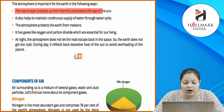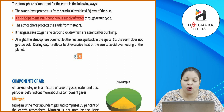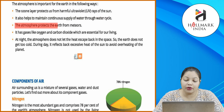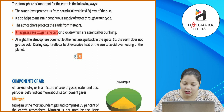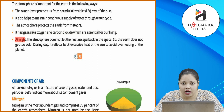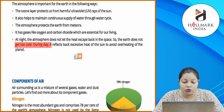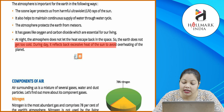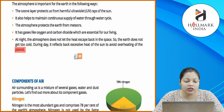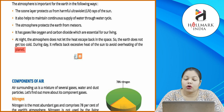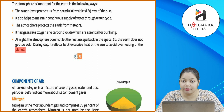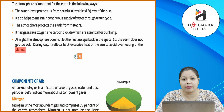The atmosphere is important for the earth in the following ways: the ozone layer protects us from harmful ultraviolet rays of the sun; it also helps to maintain a continuous supply of water through the water cycle; the atmosphere protects the earth from meteors; it has gases like oxygen and carbon dioxide which are essential for living. At night, the atmosphere does not let heat escape back into space, so the earth does not get too cold. During day, it reflects back excessive heat of the sun to avoid overheating of the planet.